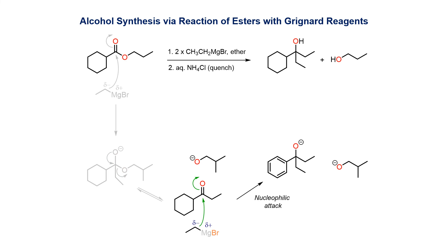The produced ketone is actually more electrophilic than the original ester, so the ketone is attacked rapidly by the second equivalent of the Grignard reagent. This forms a second carbon-carbon bond and results in a tertiary alkoxide.